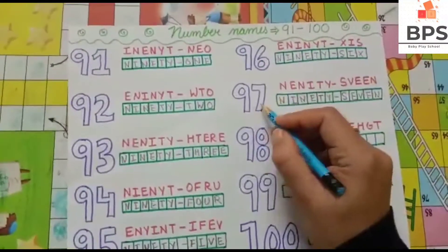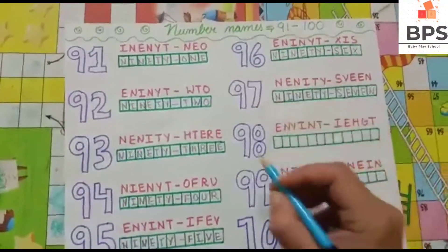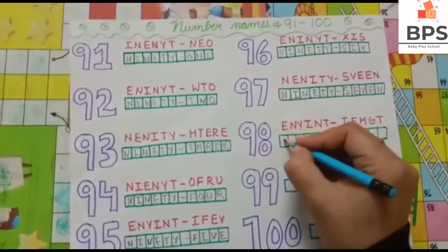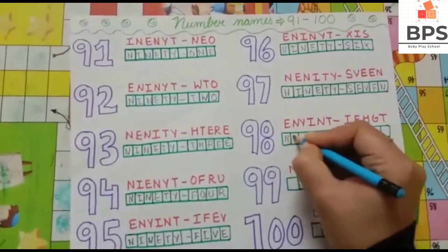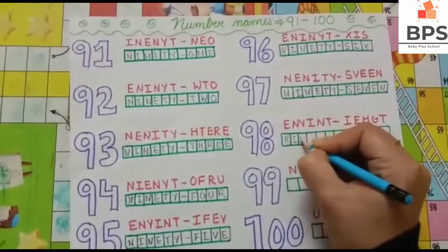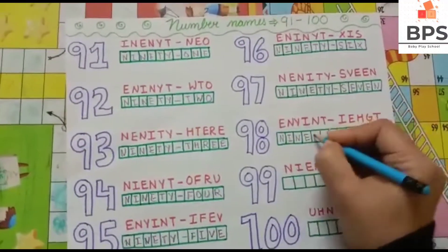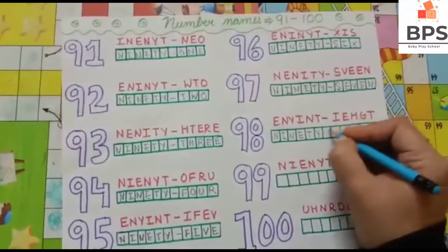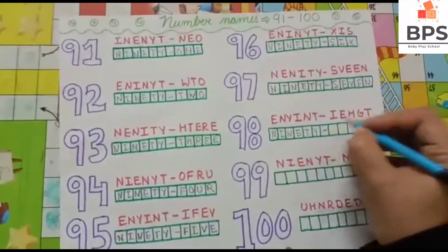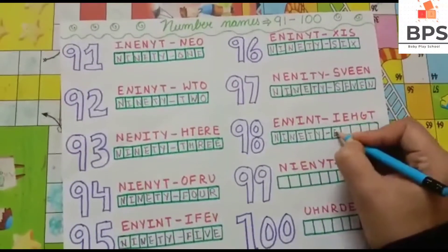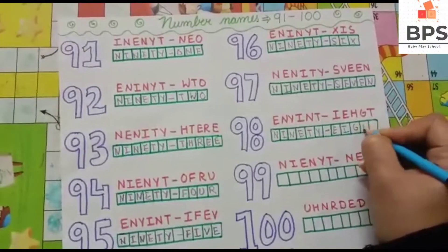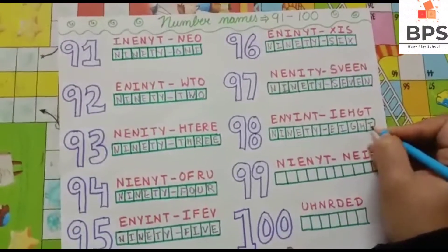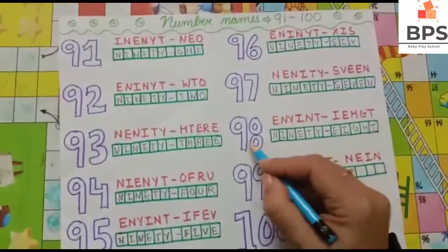9, 8, 98 — N-I-N-E-T-Y, 90, E-I-G-H-T, 8, so 98.